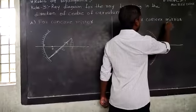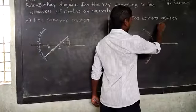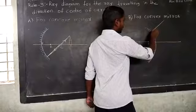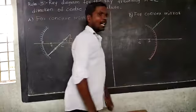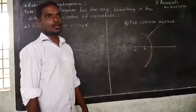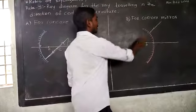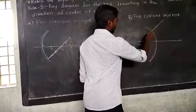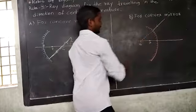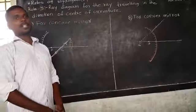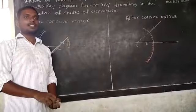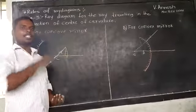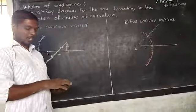Incident ray is, the incident ray is passed through the center of curvature, center of curvature, and same line.